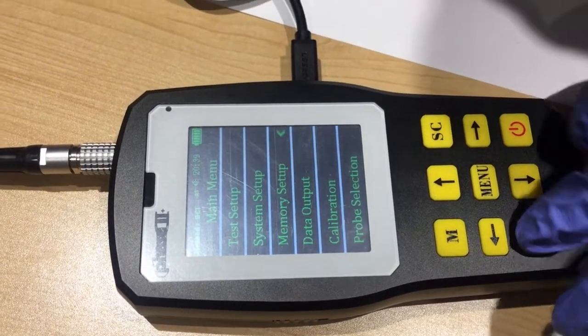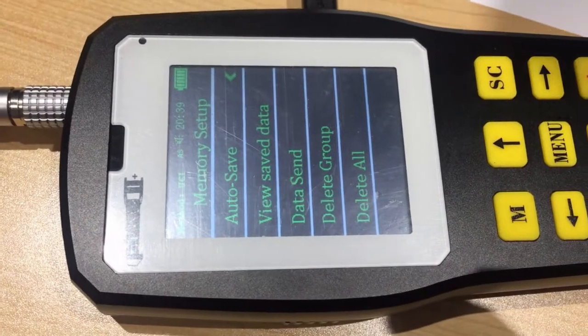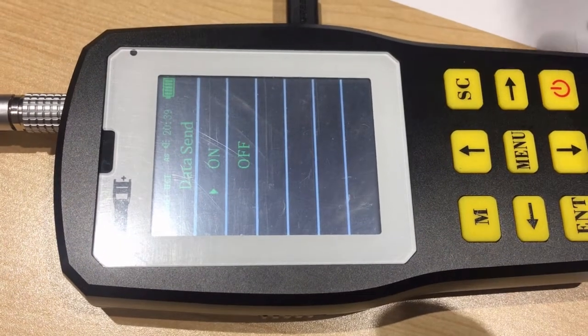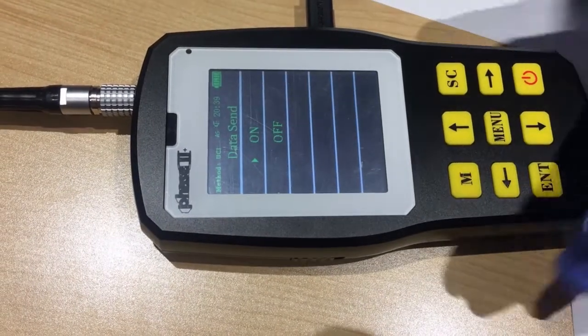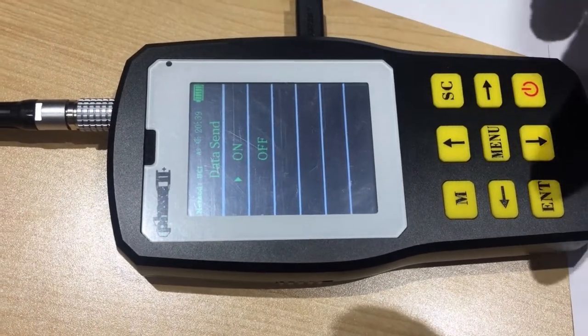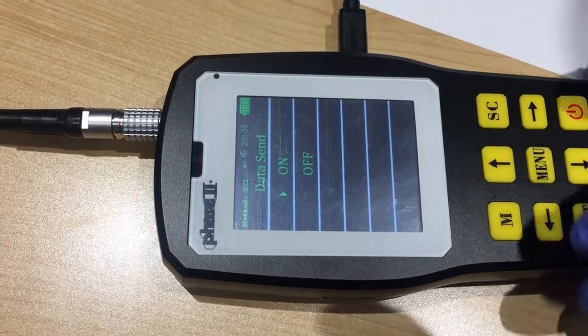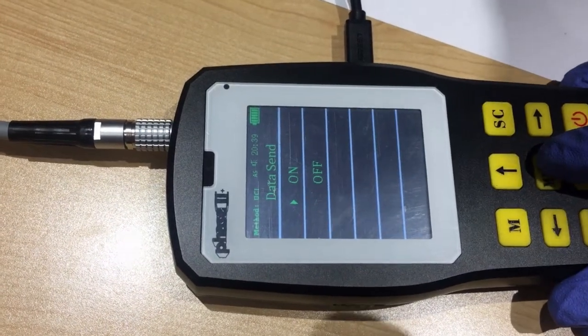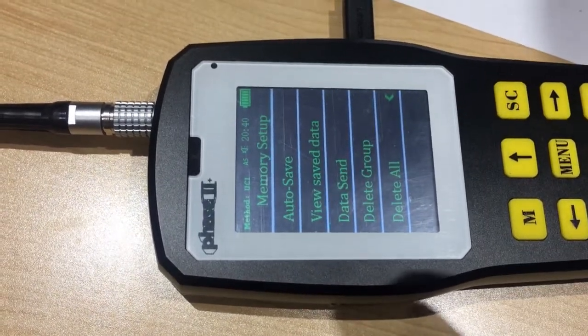The memory setup here is something very important, because you want to read your data to the PC to save it. And you must use this function. Data sent, you can choose it on or off. If you choose it off, the data will be saved in the machine, and it allows at most 2,000 groups of data. After that, the data will be automatically deleted. And if you choose on, your data will be transferred to your computer if you are linked. Here you can delete the groups you don't want, and also you can choose to delete them all.